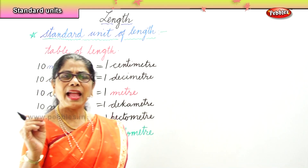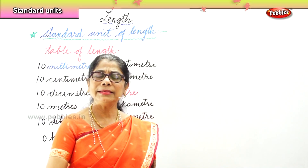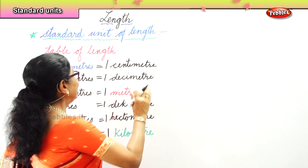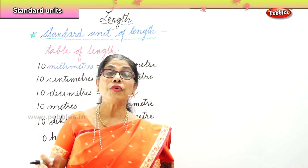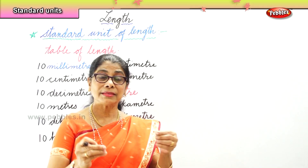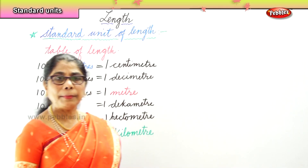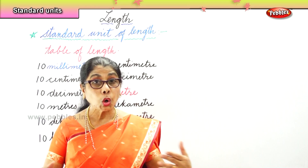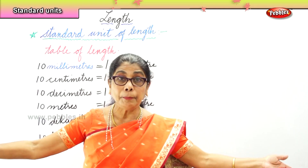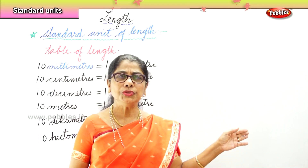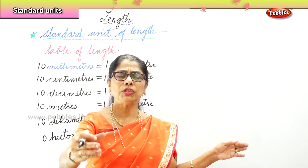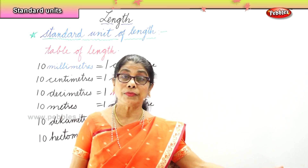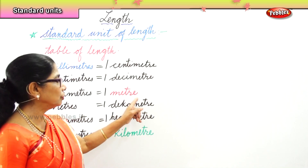Millimeters are normally used for measuring small things — for example, this length is 5 centimeters and 2 millimeters. Centimeters are used for measuring erasers, pencils, and things like that. Meters are used for ribbons, long hair, sarees, cloth, the classroom length, the board length, telephone wire, and rolls of cloth.